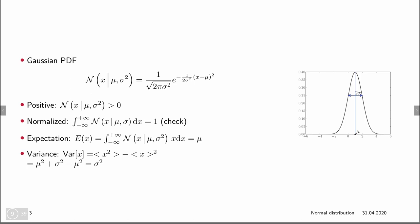The distribution has an expected value, which is the integral from minus infinity to plus infinity of x times the density of x, and that expected value is mu, the mean. It also has a variance given by the expected value of x squared minus the square of the expected value, and that equals sigma squared.